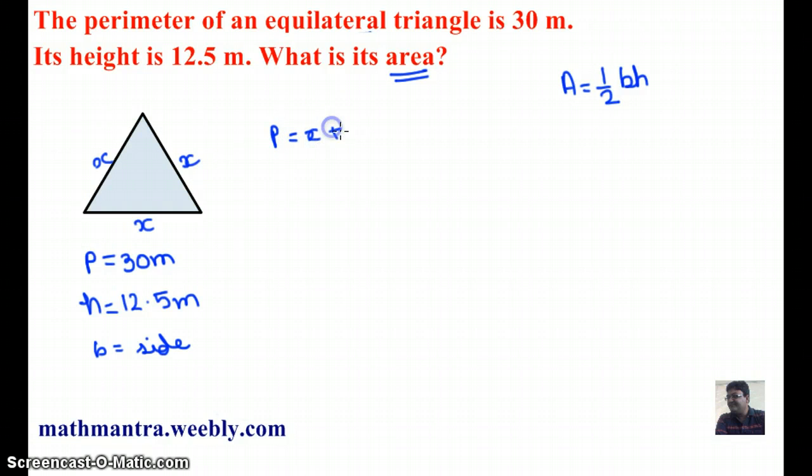Which is x plus x plus x. Substituting this value here, I get 30 meters as 3x, and dividing both sides by 3 to find the value of x, these 3's cancel out, and I get 10 as x. So the base of the triangle is 10 meters.